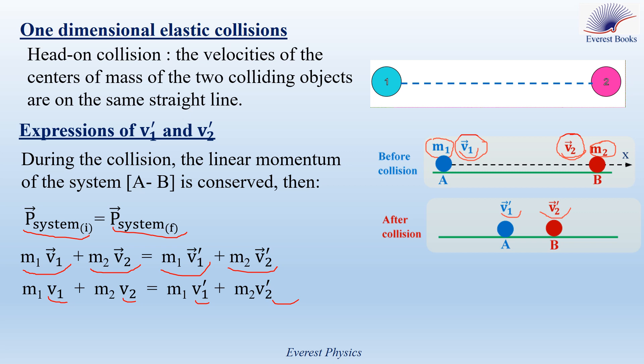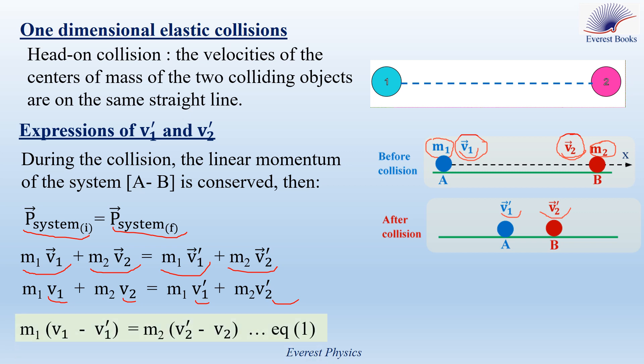Taking M1 as a common factor on the left side and M2 as a common factor on the right side gives: M1·(V1 − V1') = M2·(V2' − V2). This is equation 1.